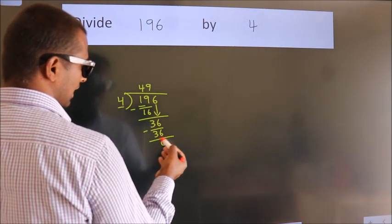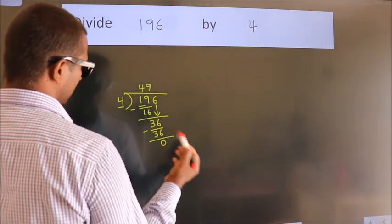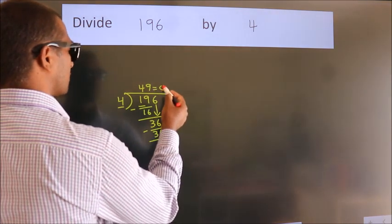We get 0. After this, no more numbers to bring down and we got remainder 0. So this is our quotient.